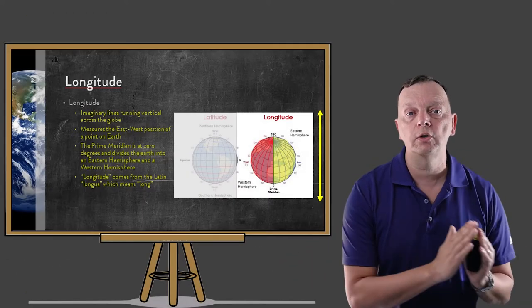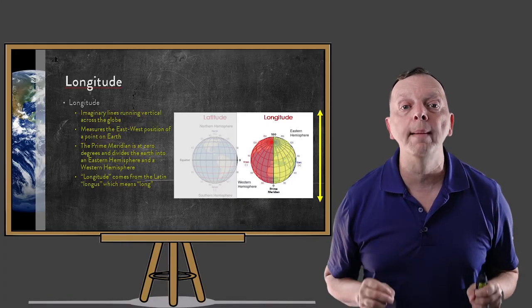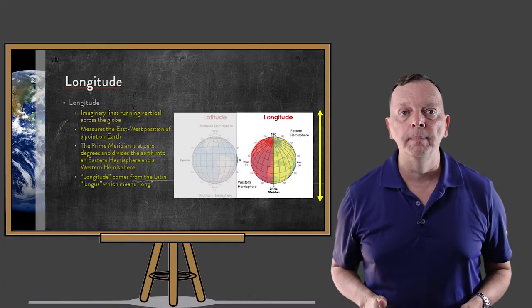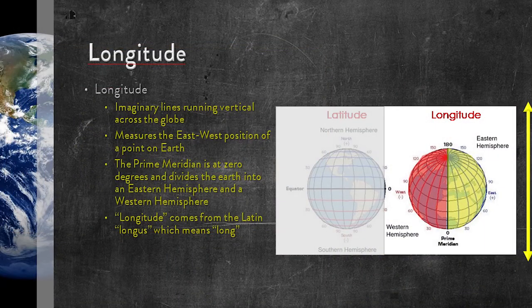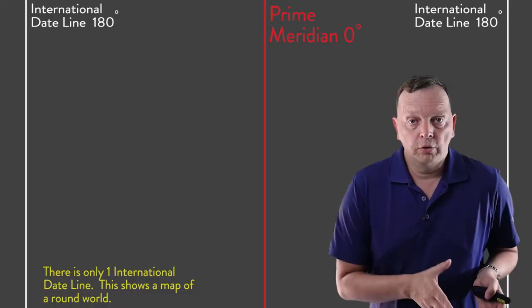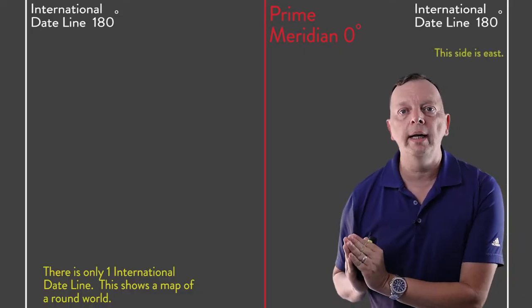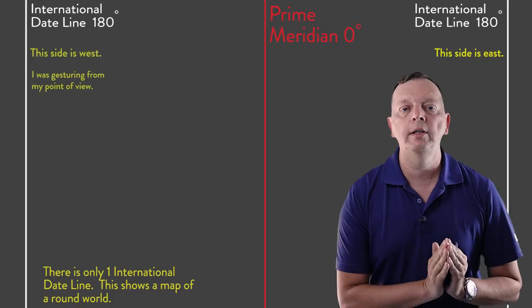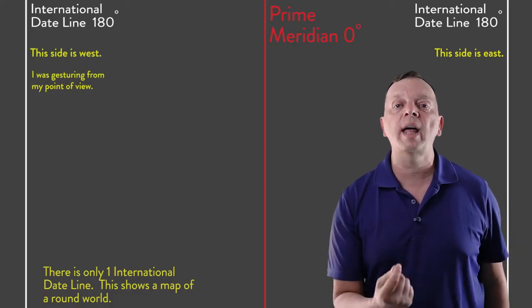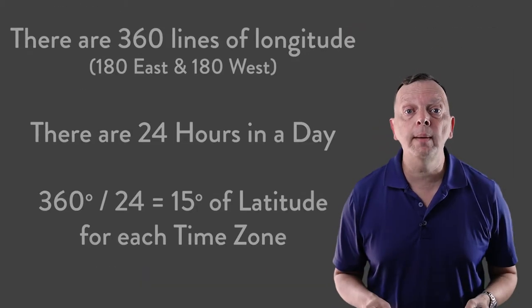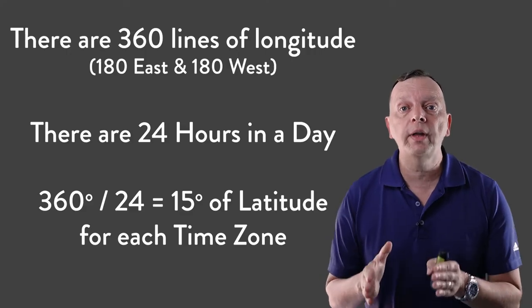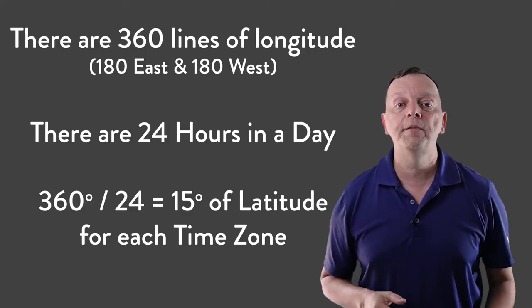So if latitude tells us how far north and south you are, longitude tells us how far east and west you are of something known as the prime meridian, which runs right through Greenwich, England. The prime meridian, which is at zero degrees longitude, separates the earth into an eastern and a western hemisphere. Longitude is measured by degrees starting at the prime meridian — going either east 180 degrees or west 180 degrees, meeting at what is known as the international dateline. One interesting role that longitude plays is in time: the time zones of the world are actually based upon longitude, with each time zone being about 15 degrees longitude.